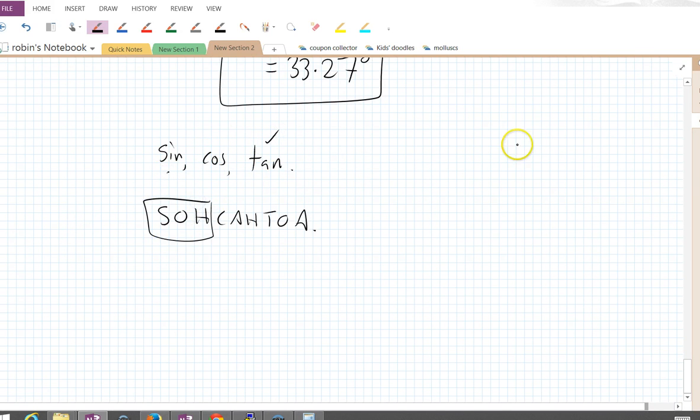Sine is opposite over hypotenuse. So again, writing it all out in standard format here. That's theta, that's opposite, that's hypotenuse, that's adjacent. Sine theta, of course, opposite over hypotenuse.